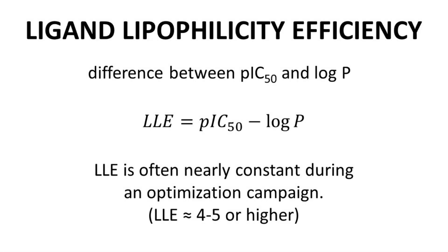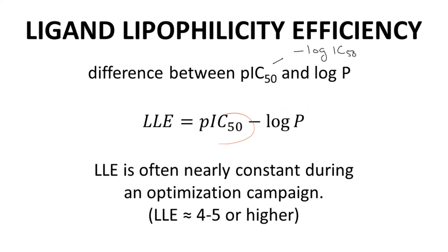Ligand efficiency is encountered in medicinal chemistry discussions, but it has become somewhat less popular over the years. Ligand lipophilicity efficiency is the difference between a compound's pIC50 — note that pIC50 is the negative log of IC50 — and the compound's log P value. So LLE equals pIC50 minus log P. The equation for LLE demonstrates the direct tension between potency and lipophilicity. Higher LLE is considered better, so you want high potency to offset lipophilicity.